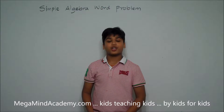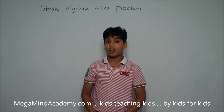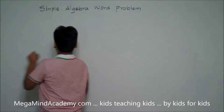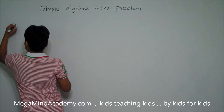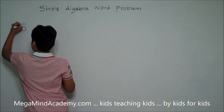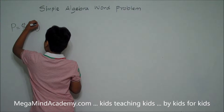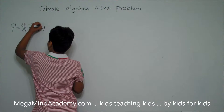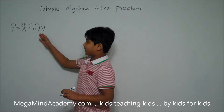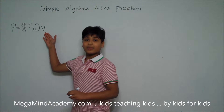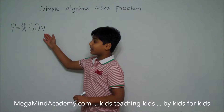Let's say there is a person called Peter and he has 50 V dollars with him. Peter has 50 V dollars. You might wonder why do we have a V — because in algebra we have variables, and V is a variable.